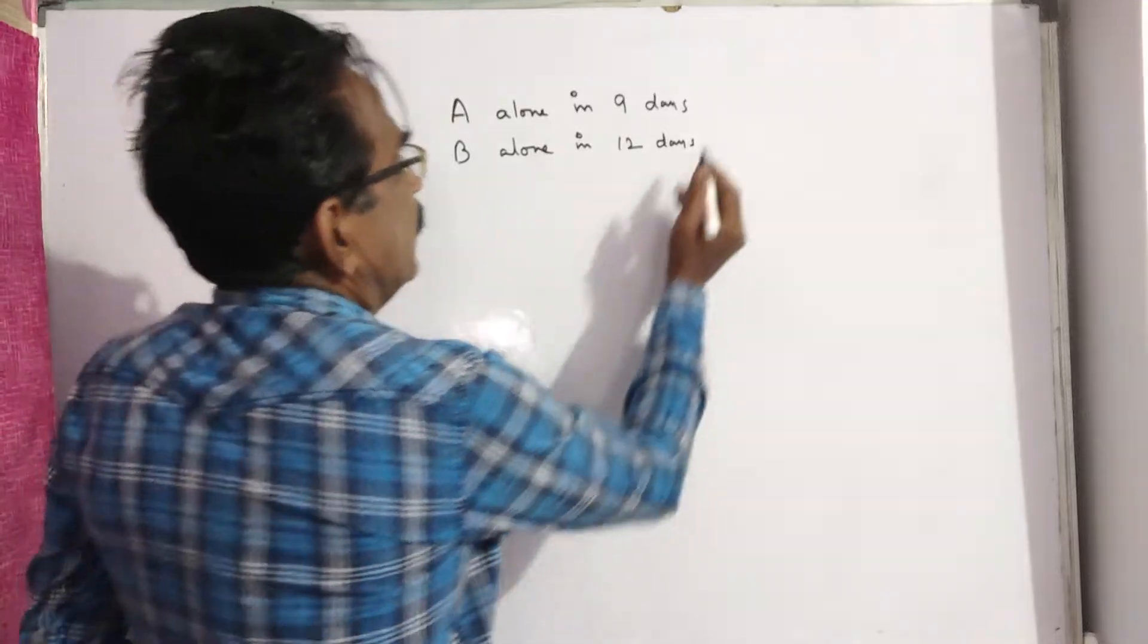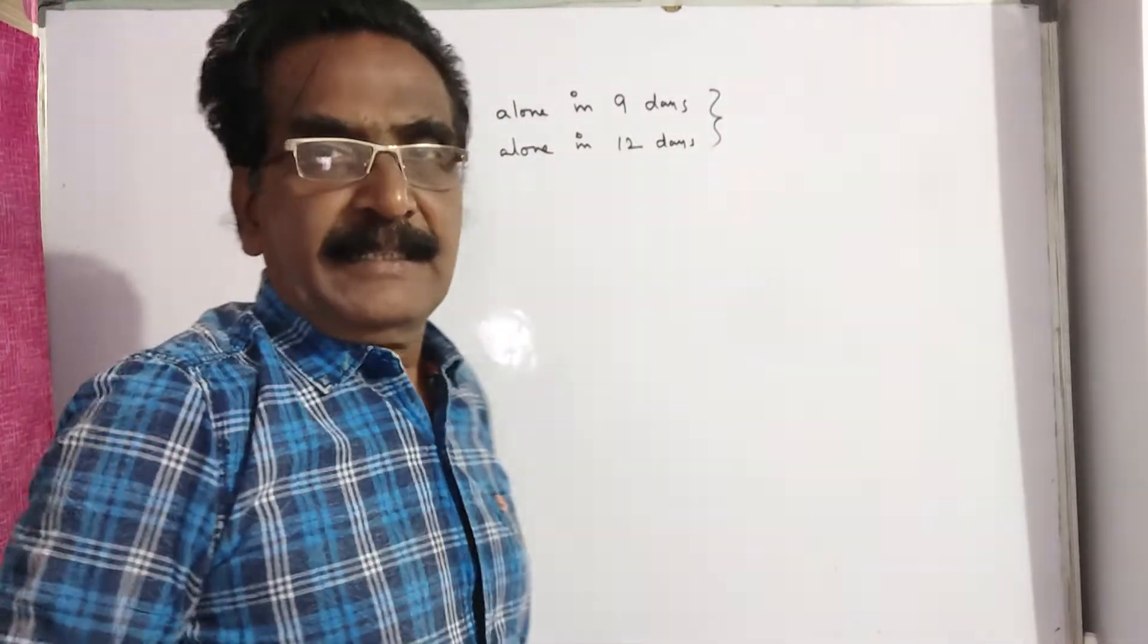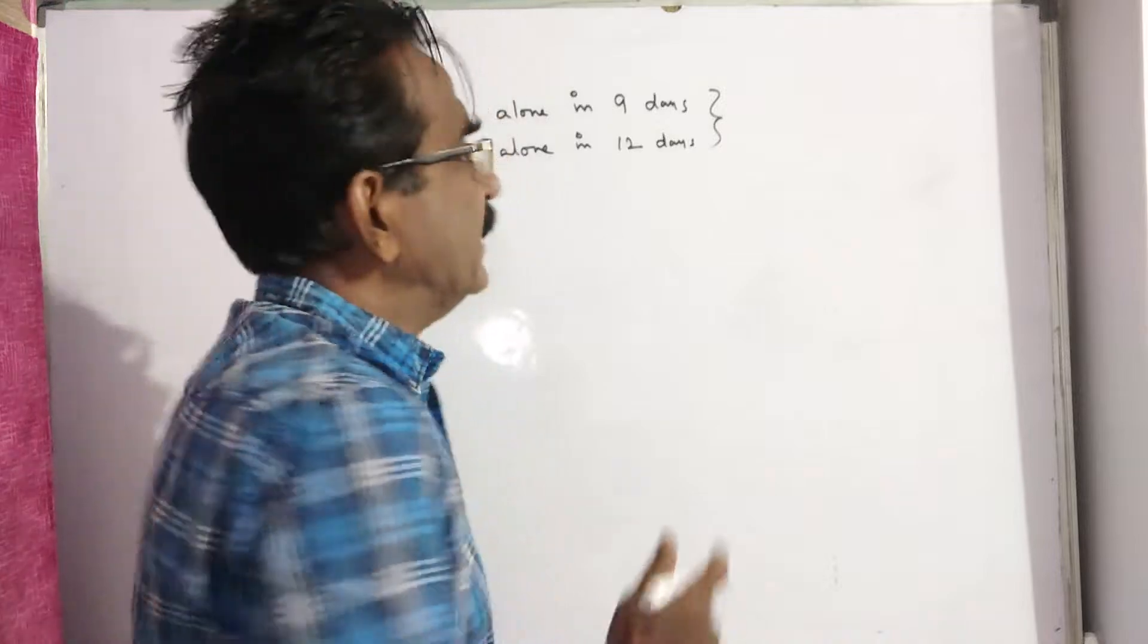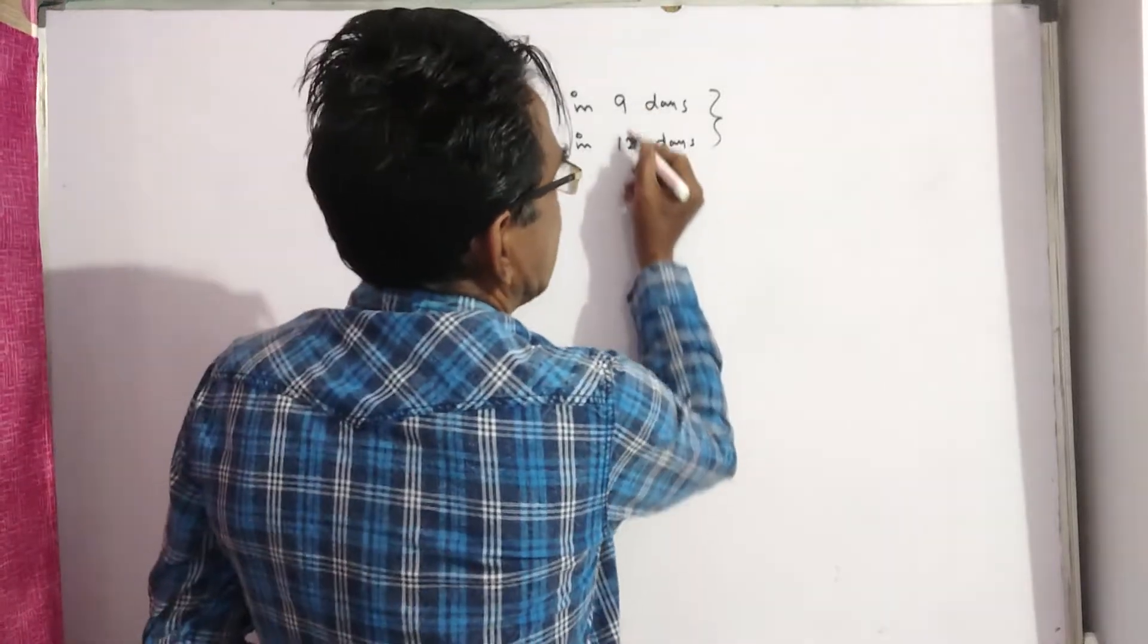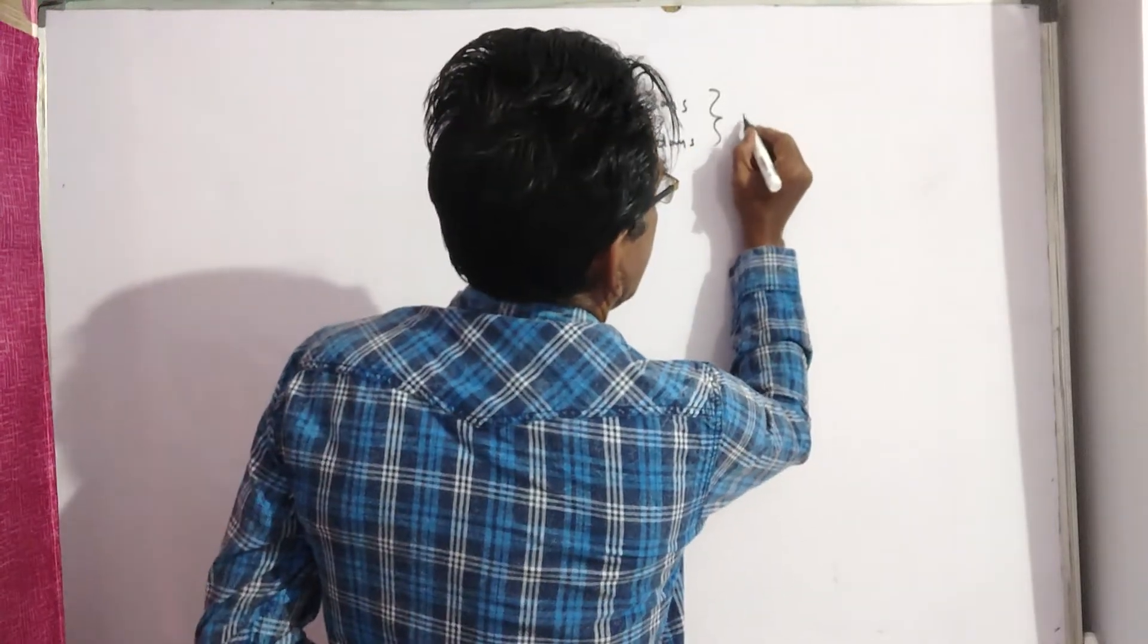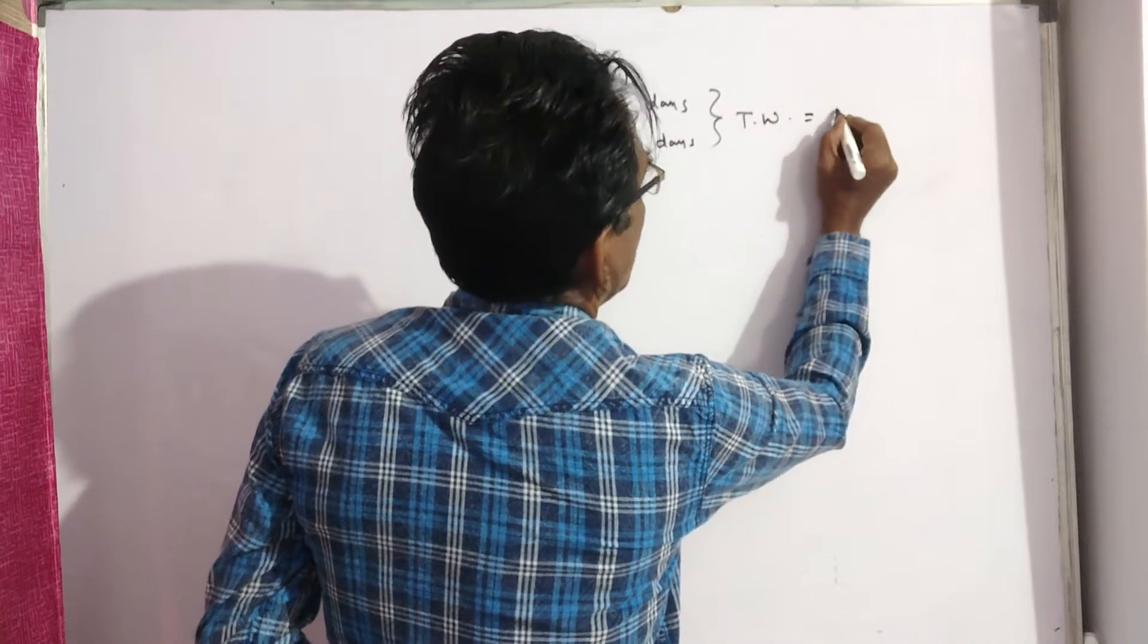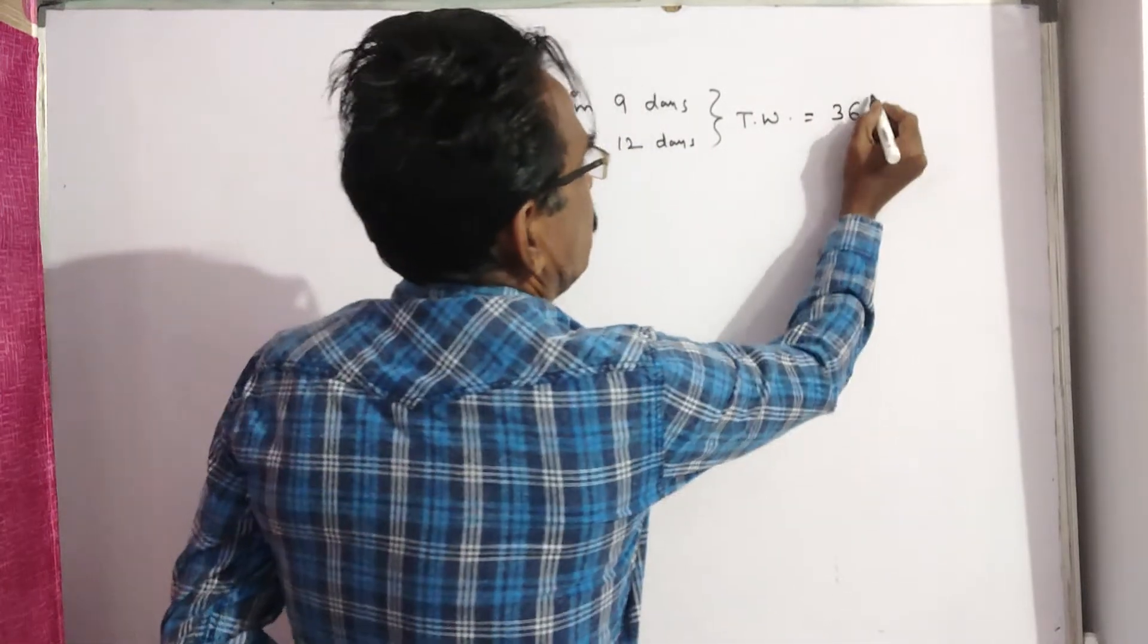The total work is the LCM of these two numbers, that is total work is equal to 36 units.